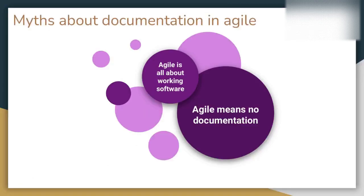You might have heard phrases like 'agile means no documentation' or 'agile is all about only working software.' Definitely, agile methodologies value working software over comprehensive documentation, but agile also recognizes the importance of documentation in various aspects of the project life cycle. The key point here is to strike the right balance between documentation and working software to ensure effective communication and collaboration. Agile does not promote zero documentation — rather, there is an emphasis on 'just enough documentation,' which we will cover in a coming slide.